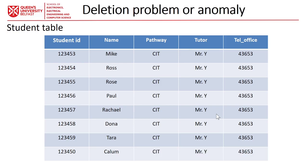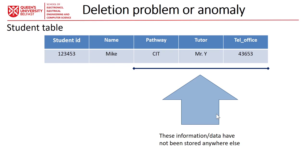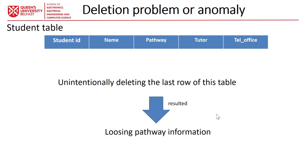Another problem would be the deletion anomaly. As part of the manipulation of these tables and databases, if we are going to delete some records from this dataset or table, by deleting all of this data we ultimately face the problem of excluding important information that we didn't want to exclude. For example, unintentionally deleting the last row of a student record and losing pathway information. This is another problem of duplication, which we call deletion anomaly.